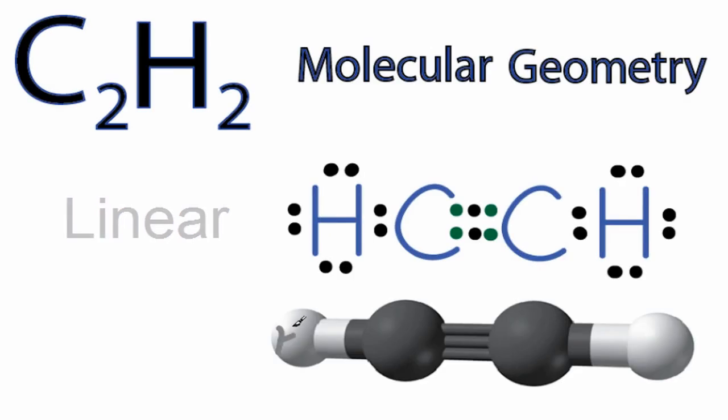And that's going to look like this. We have the hydrogens on the end, and then the carbons there in the center. And you can see it's in a straight line. It's a linear molecular geometry. And we have a triple bond right here, just like we have up here.